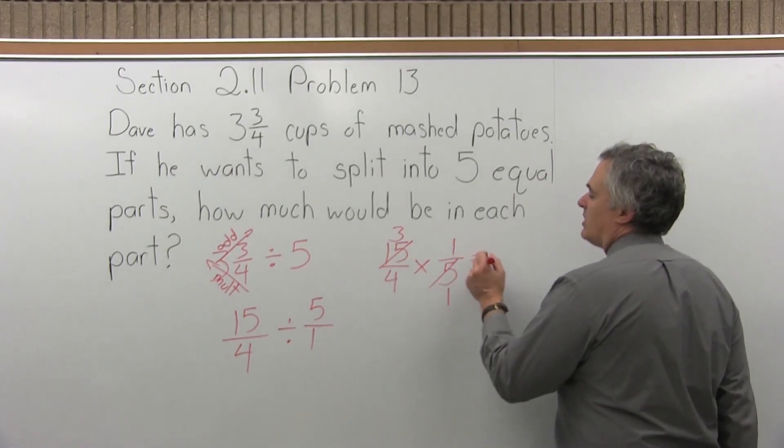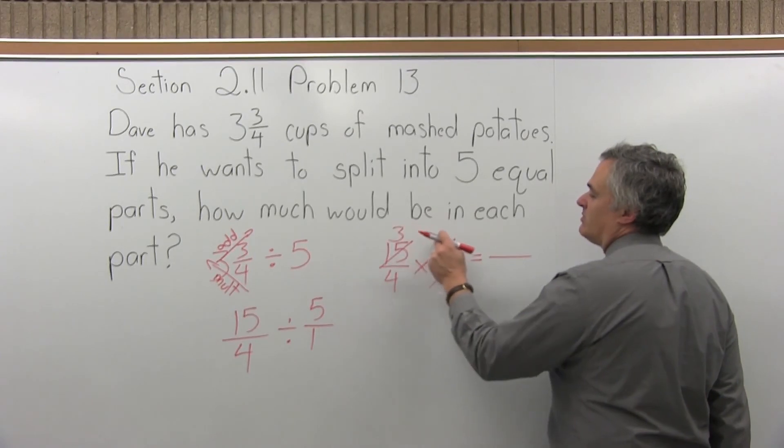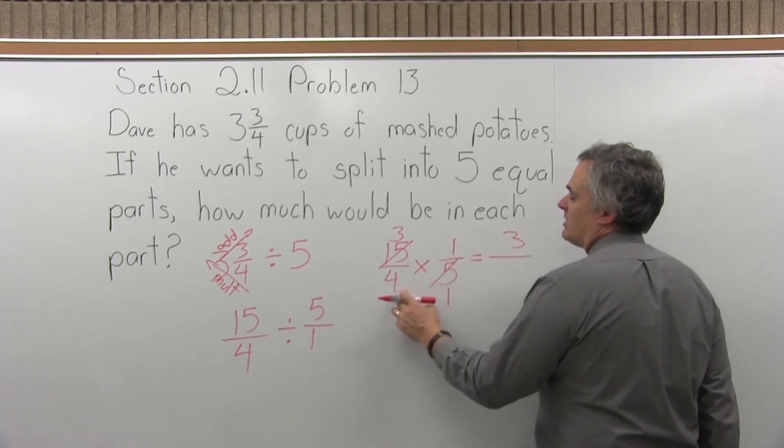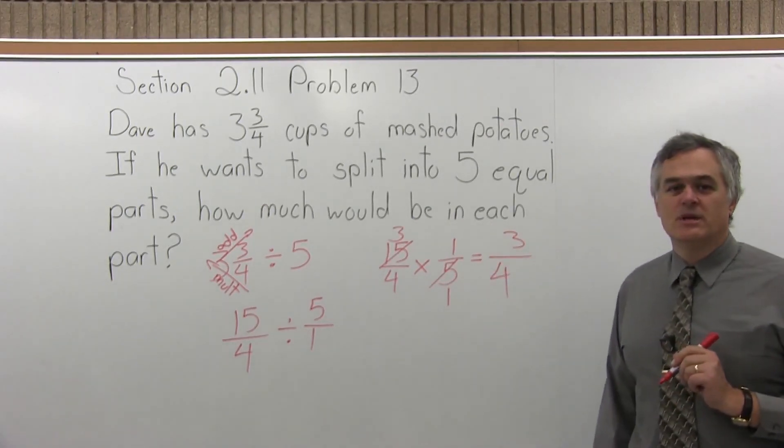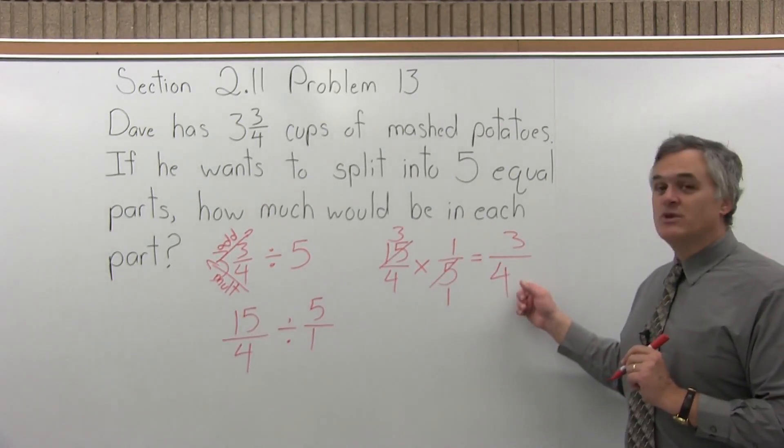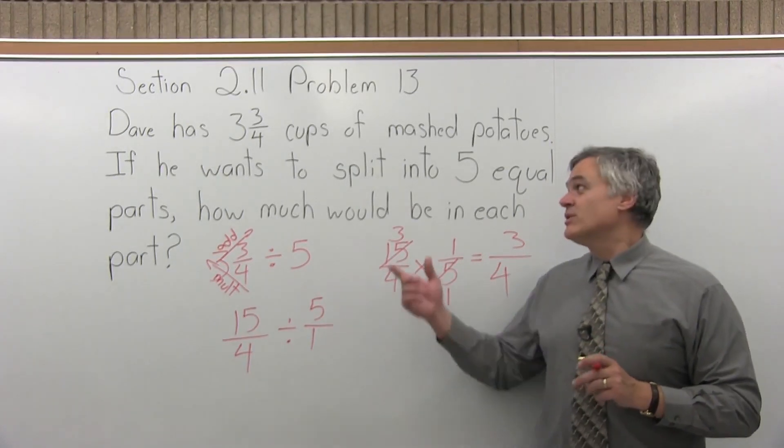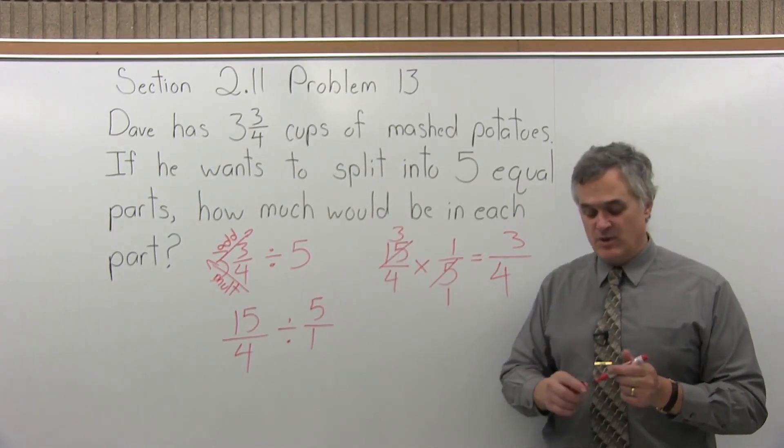Now when I multiply numerator times numerator, I'm multiplying three times one, which is three. Denominator times denominator will be four times one, which is four. And now the final answer is three fourths. So if you split the three and three quarter cups of mashed potatoes into five equal parts, each part is three quarters of a cup of mashed potatoes.